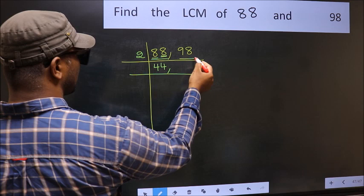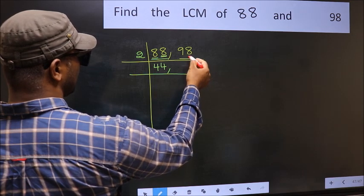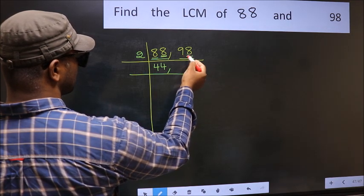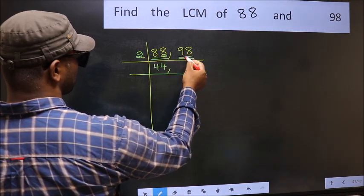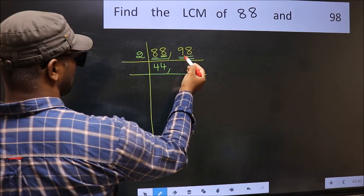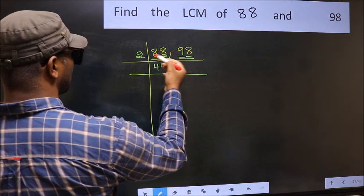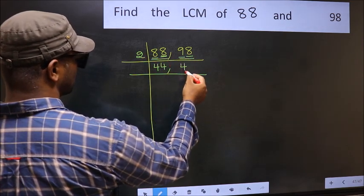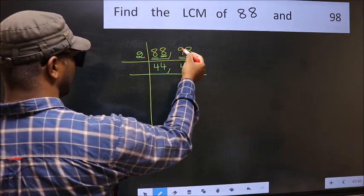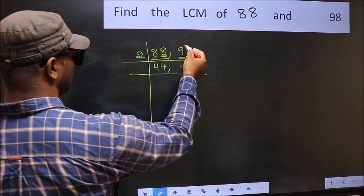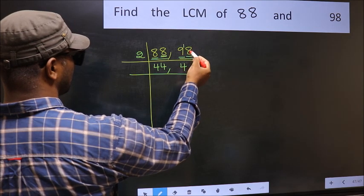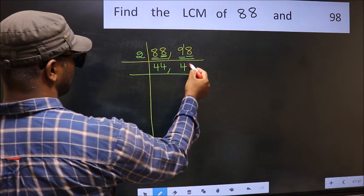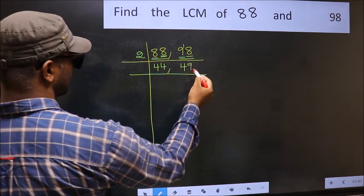Now the other number 98 — last digit 8, it's even, so this is divisible by 2. First digit 9: a number close to 9 in the 2 table is 2 fours, which is 8. 9 minus 8 is 1, carried forward: 18. When do we get 18 in the 2 table? 2 nines are 18.